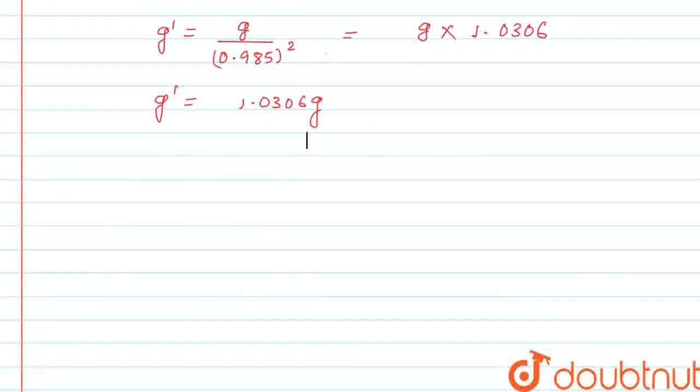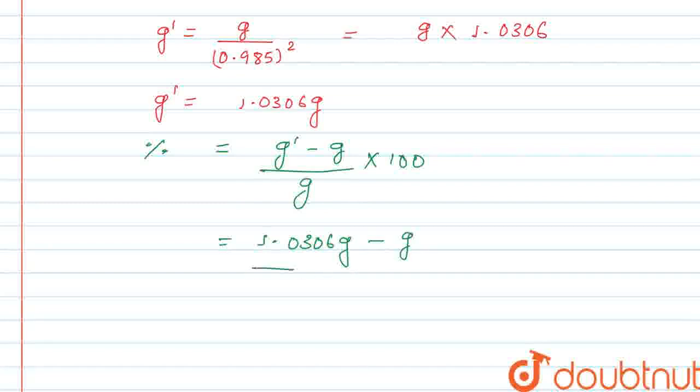Change in percent, that is the percentage change. The formula for the percentage change will be g prime minus g upon g into 100. So from here all g will cancel out in numerator and denominator. So it will be 1.0306 minus 1 into 100.